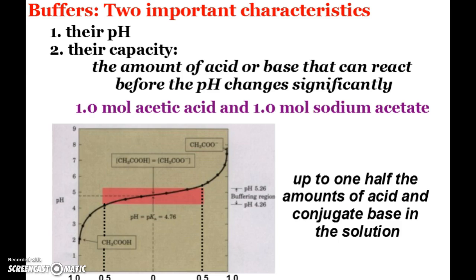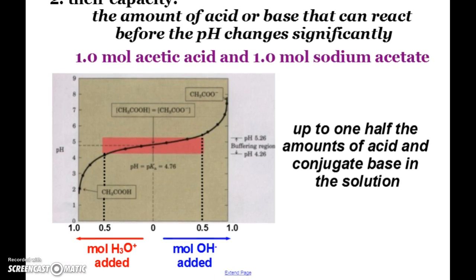So our most important characteristics of a buffer: one, their pH, because we want them to work at a certain pH, like the pH of our blood should be somewhere around 7.2 to 7.4. So we don't want buffer systems in our body to have pHs way outside of that range, or they wouldn't work for what we need them to. And then, as I've been mentioning, the capacity, how much acid or base can react before the pH will change dramatically. And you can see that here in this little graph.